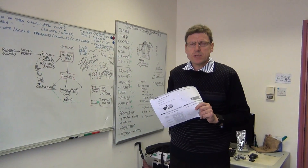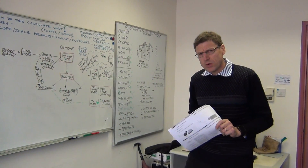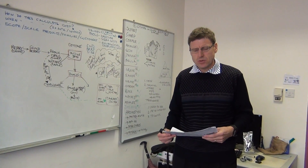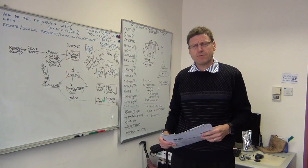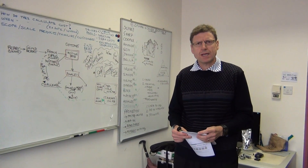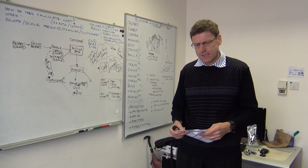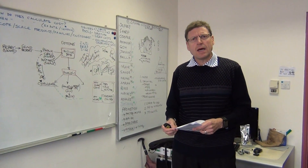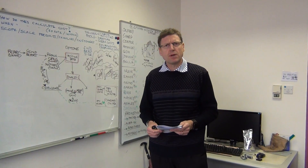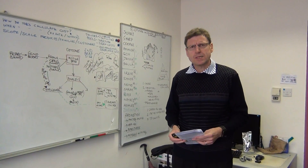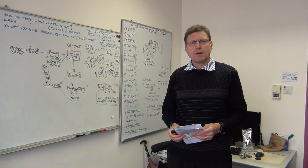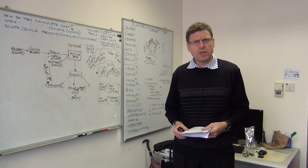We want to move very quickly through cost allocation. The most important thing with cost allocation is to understand the different criteria for it. There is cause and effect, benefits received, fairness, and ability to bear costs. Organizations around the world allocate costs according to some part of these four principles.